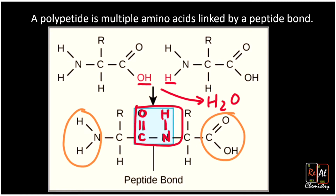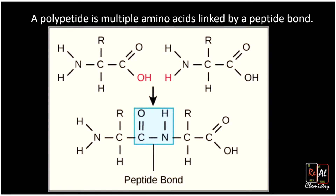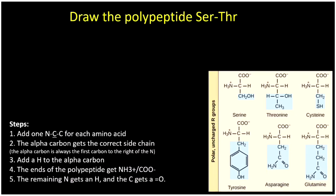One last thing to note: when you see NH2 on the end of our polypeptide, sometimes a list of amino acids will draw this as NH3+ and the C-terminus as C with a double-bond O and a single-bond O minus. The reason is that at physiological pH — the pH of our bodies — those are charged. So sometimes you'll see them in their charged form, and in fact the list we're going to use will show them charged.